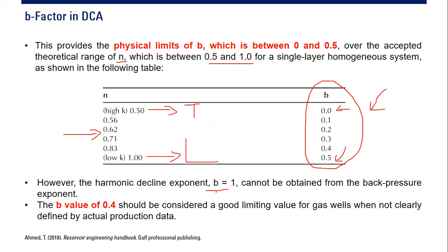The b value of 0.4 should be considered as a good limiting value for gas wells when not clearly defined by actual production data.